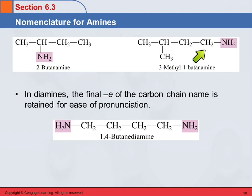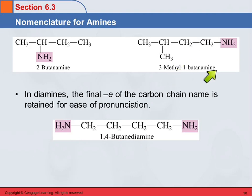Over here we also have butanamine, but here the nitrogen is on the first carbon, so this is 1-butanamine. And there's another group on the third carbon. Counting 1, 2, 3, 4 — the methyl group is on the third carbon. So: 3-methyl-1-butanamine.